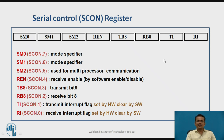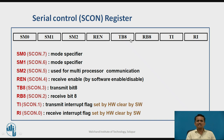This is the bit format of SCON, the special function register for serial communication. Since serial communication can generate interrupts, TI and RI are the interrupt flag bits. TI (transmit interrupt) is automatically set when transmission is successful, and RI (receive interrupt) is set when reception is successful. These bits are set by hardware, but — unlike other interrupt flags which are cleared automatically — TI and RI must be cleared by the programmer.